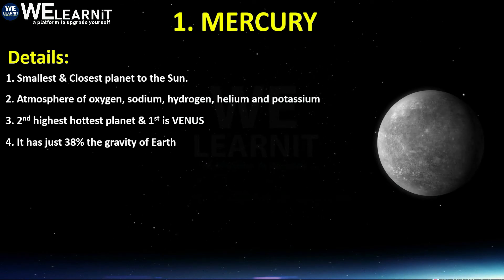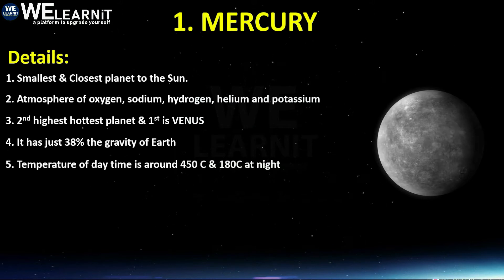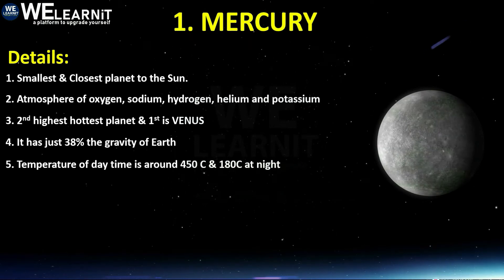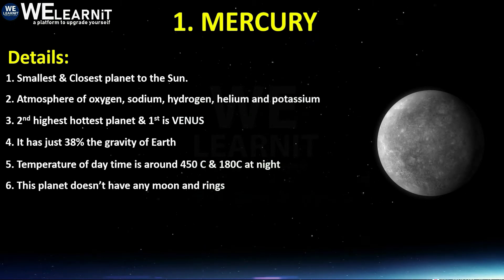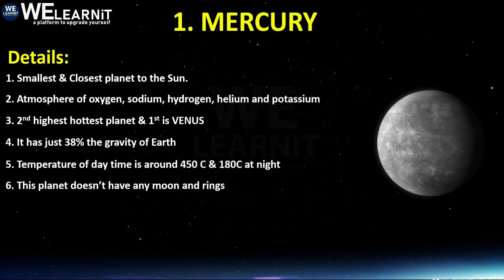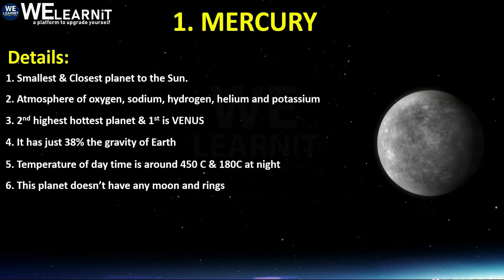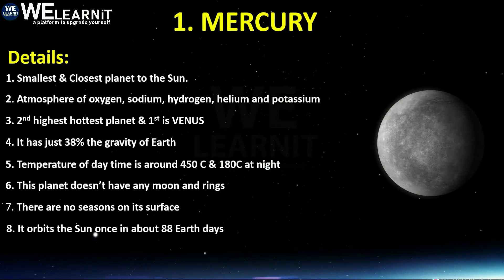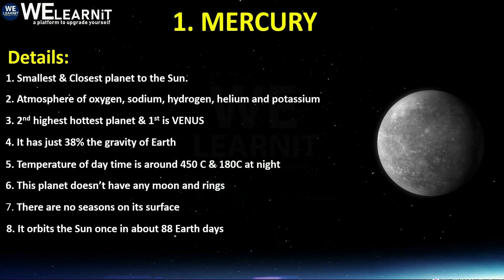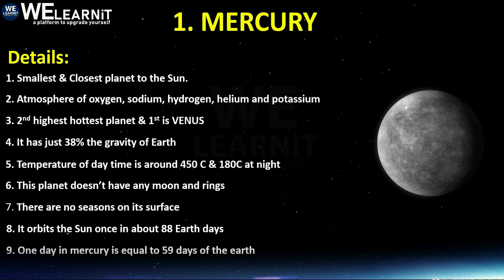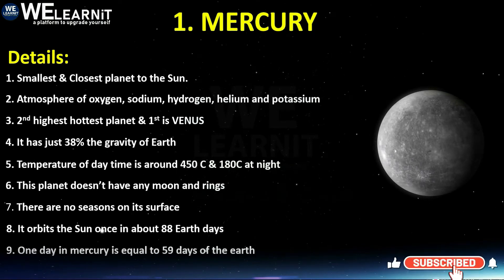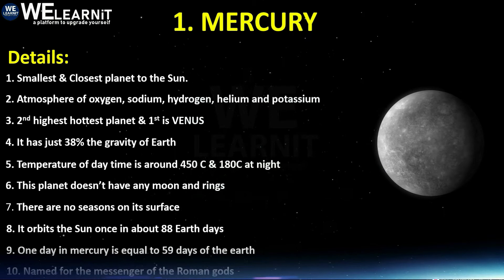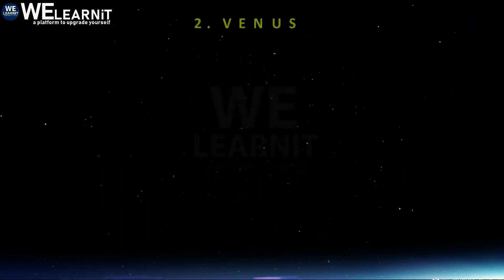Mercury has just 38% of the gravity of Earth. The daytime temperature is around 450 degrees Celsius and at night it is minus 180 degrees Celsius. This planet doesn't have any moon or rings, and there are no seasons on its surface. It orbits the Sun once in about 88 days, and one day on Mercury is equal to 59 Earth days. This planet is named for the messenger of the Roman gods.